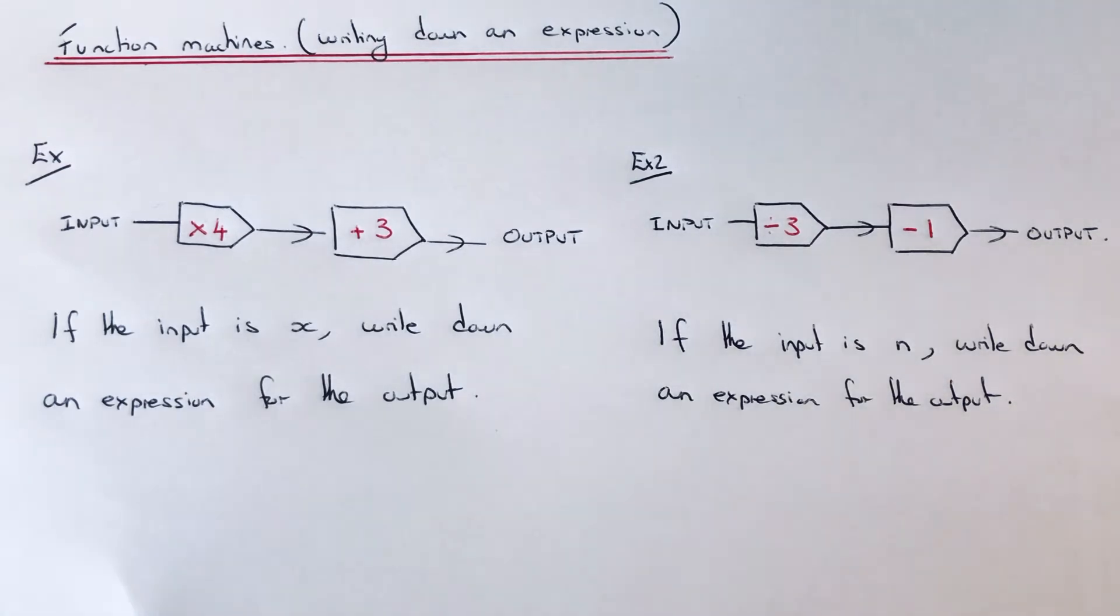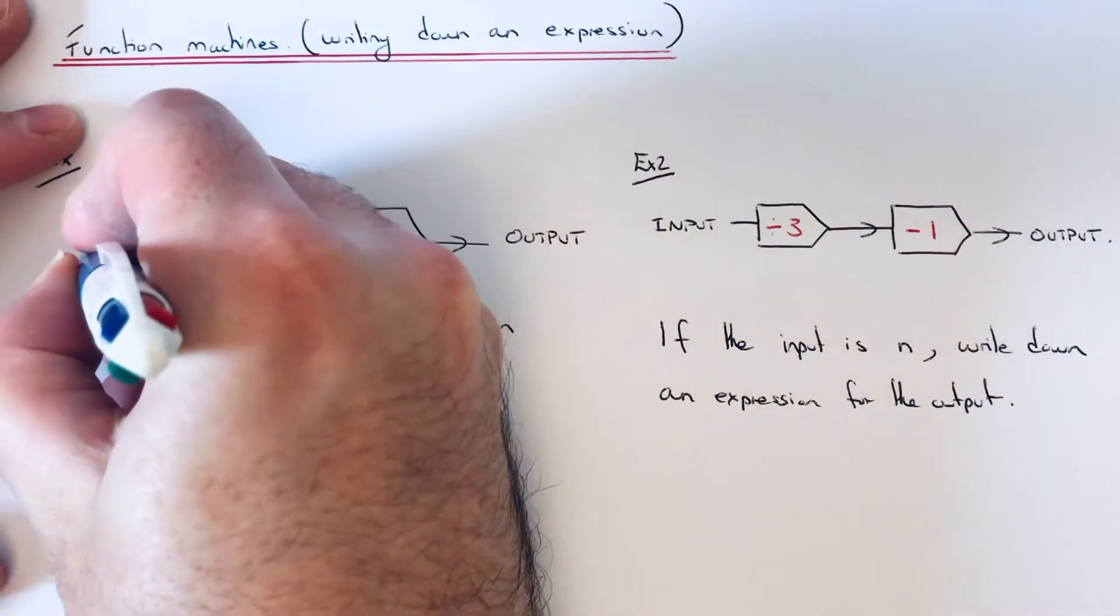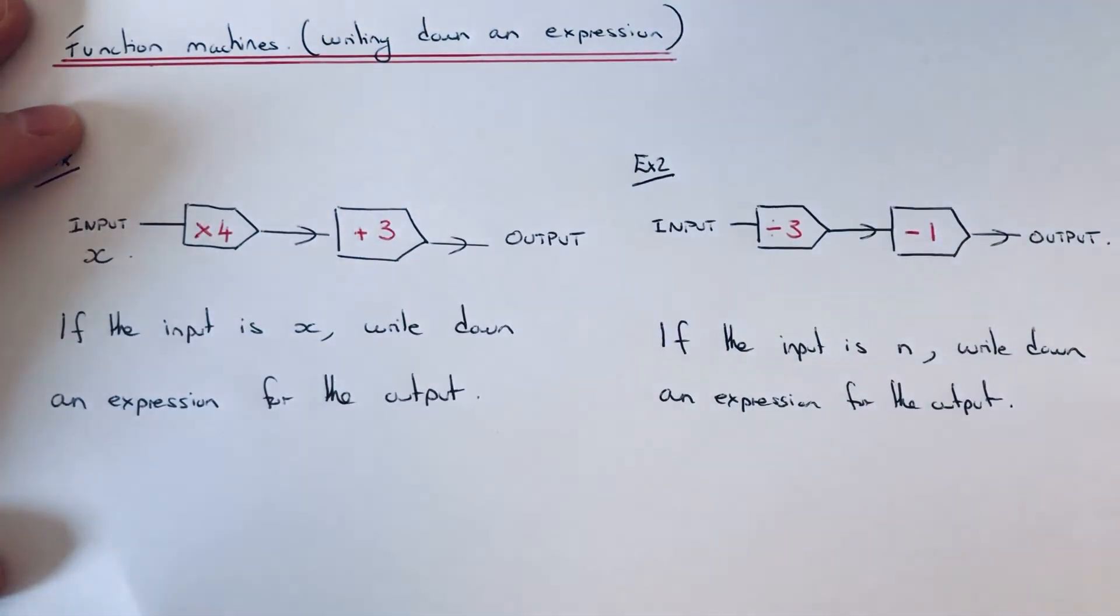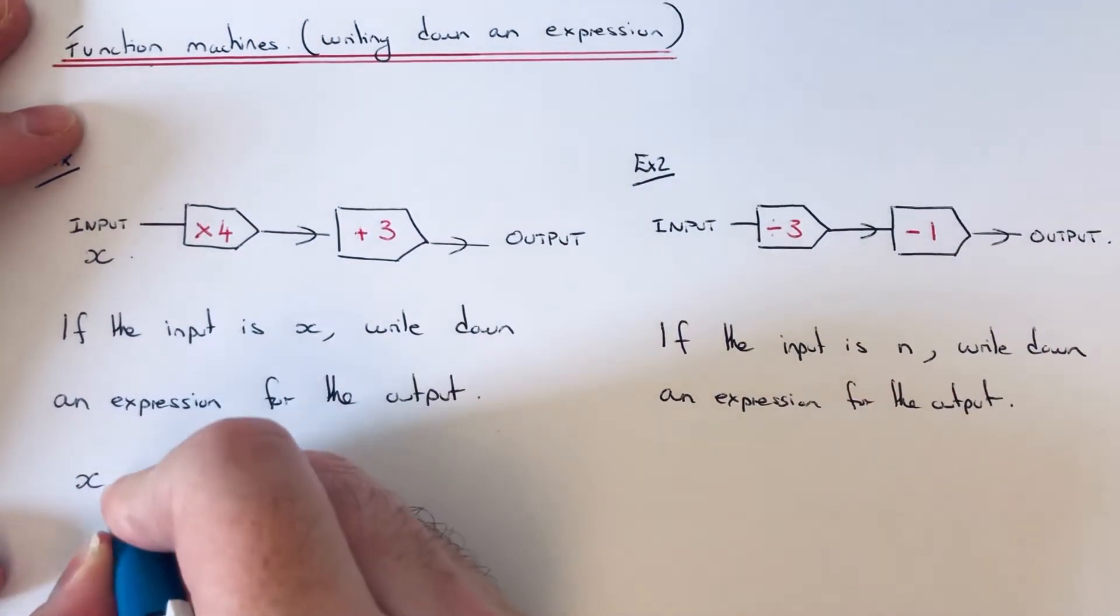At the first example, the function machine is times 4 and add 3. The question is: if the input is x, write down an expression for the output. So we're putting x into the function machine, and we're multiplying that by 4 and then adding on 3.